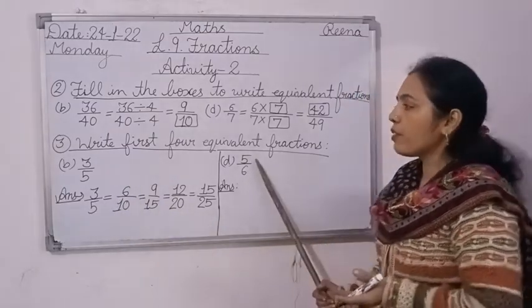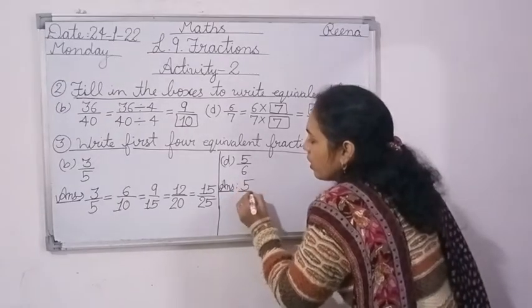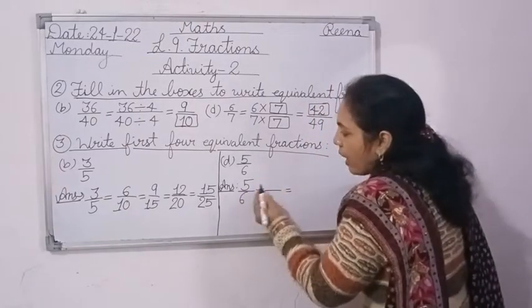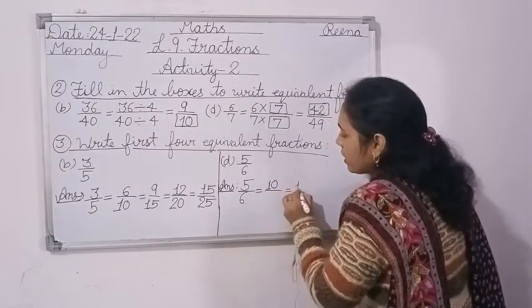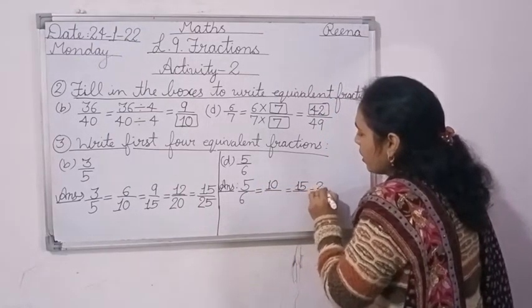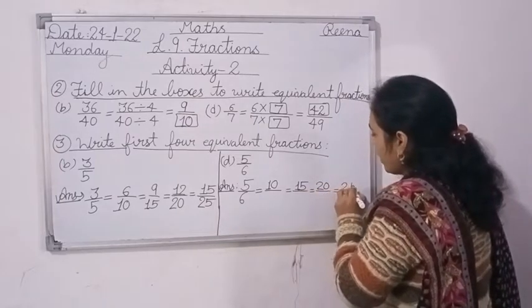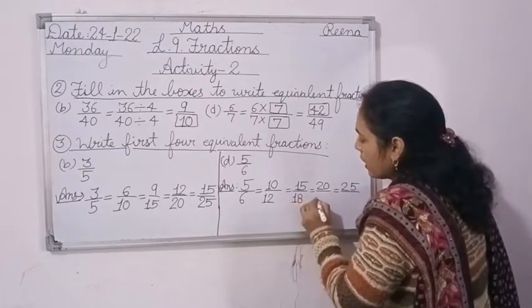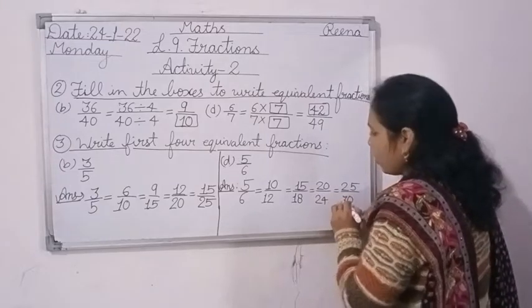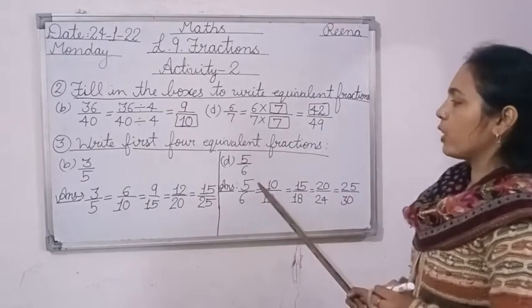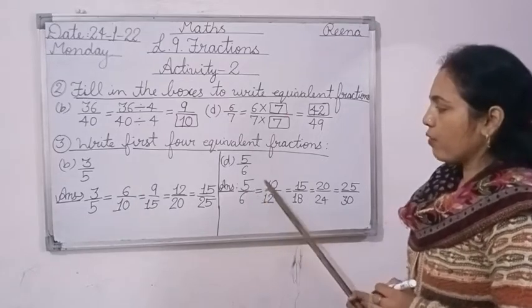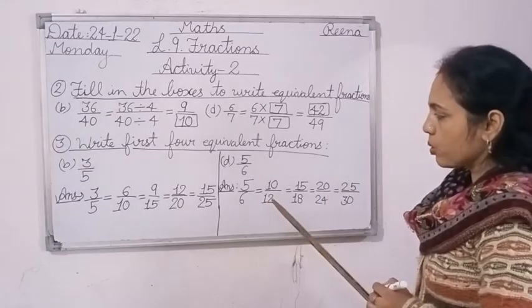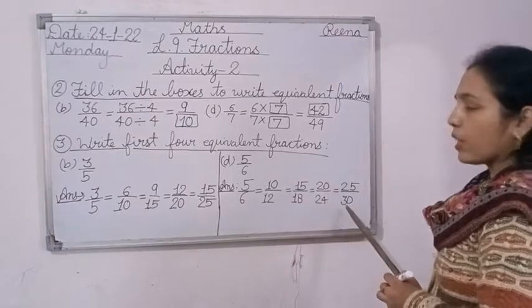In part D you have 5 upon 6. Write 5 upon 6, then the table of 5: 5×1=5, 5×2=10, 5×3=15, 5×4=20, 5×5=25. For denominator, table of 6: 6×1=6, 6×2=12, 6×3=18, 6×4=24, 6×5=30. So the equivalent fractions are 10/12, 15/18, 20/24, 25/30.